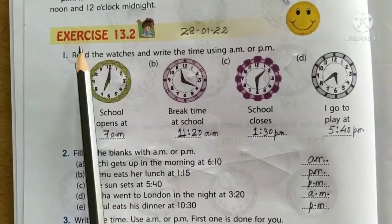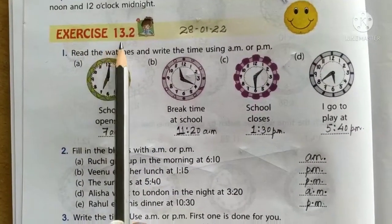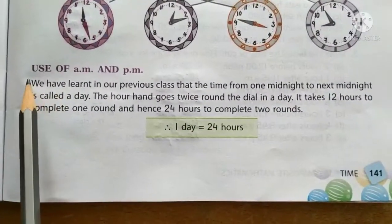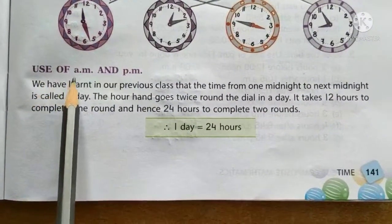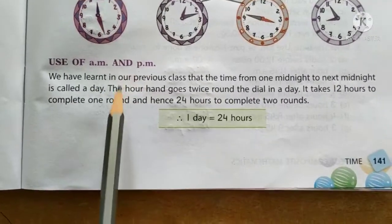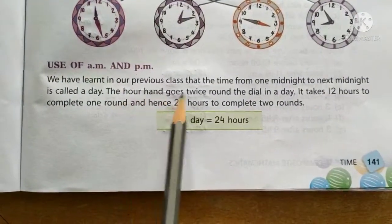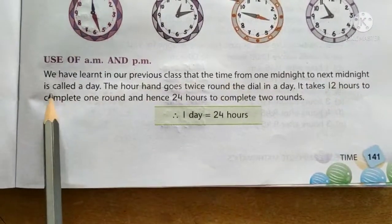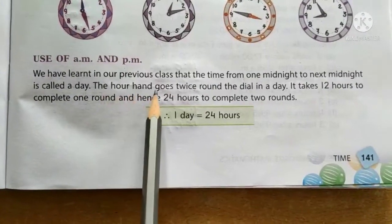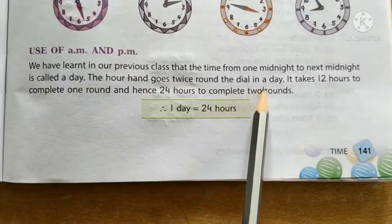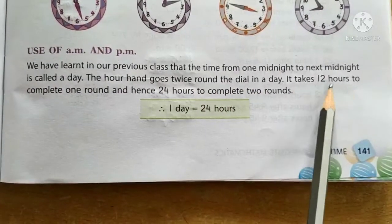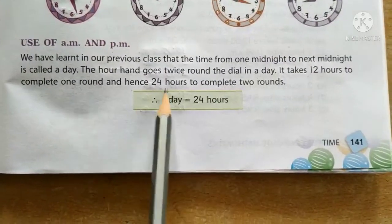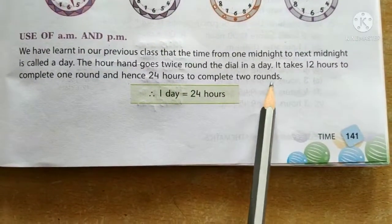Students, now let us proceed to Exercise 13.2. It is related to the concept of use of AM and PM. We know that the time from one midnight to the next midnight is called a day. The hour hand goes twice around the dial in a day — it takes 12 hours to complete one round and hence 24 hours to complete two rounds.